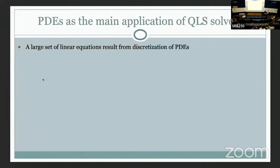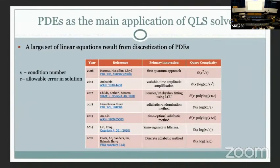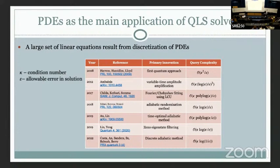PDEs have the main application for quantum linear system algorithms. When you have a differential equation without an analytic solution, you have to come up with discretization ideas, like finite difference methods, and you end up with a large system of equations to solve. There has been a lot of progress in quantum linear system solvers, starting from HHL. In 2021, we released results achieving optimal complexity in the two main parameters: the condition number and the allowable error. More recent results also get a shortcut to these optimal results, and ongoing work addresses the constant factors for practical implementation.